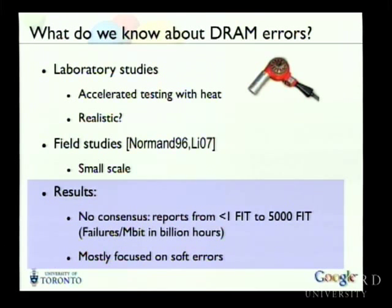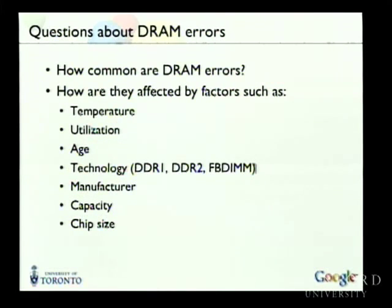Another thing: almost all existing work is entirely focused on soft errors — those caused by cosmic rays and alpha particles that temporarily flip a bit — rather than hard errors where there's a permanent hardware problem. What we really want to know is how errors behave in the field, both soft and hard. And ideally we'd also like to know: how does temperature affect error rates? How does utilization? How do age, technology type, manufacturer, capacity, and chip size all impact field error rates? That's exactly what we set out to answer when we started working on this last summer.